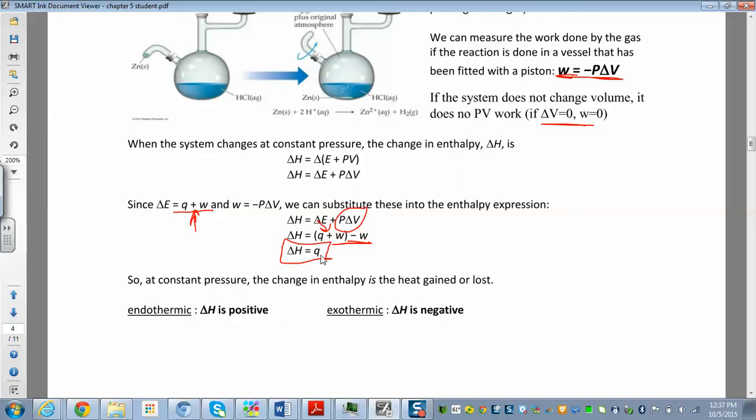which is great. This is heat. Heat's really easy to measure experimentally. We're going to measure temperature changes and relate that to heat. So this is really easy to measure experimentally, and then ΔH is really easy to work with because it's a state function.